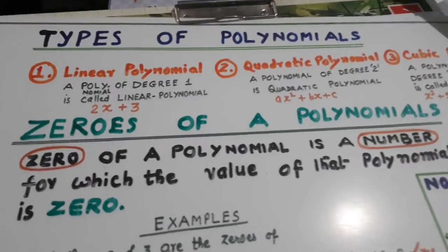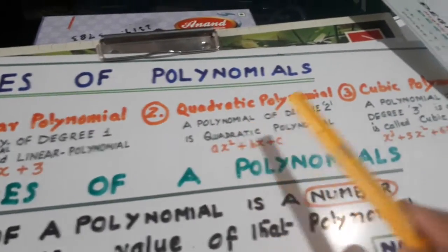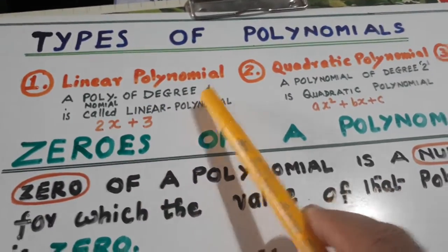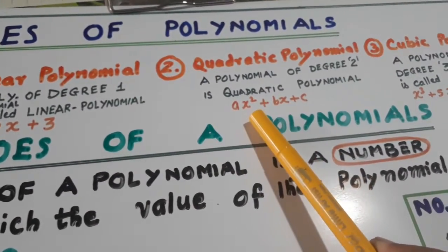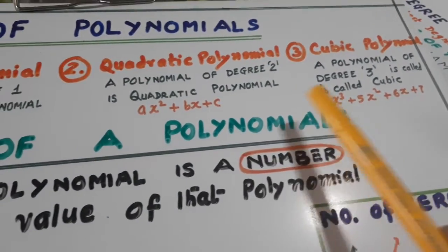Types of polynomials: Linear polynomial, Quadratic polynomial, Cubic polynomial. Linear mein degree 1 hoti hai, Quadratic mein degree 2 hoti hai, Cubic mein degree 3 hoti hai. Degree means highest degree.